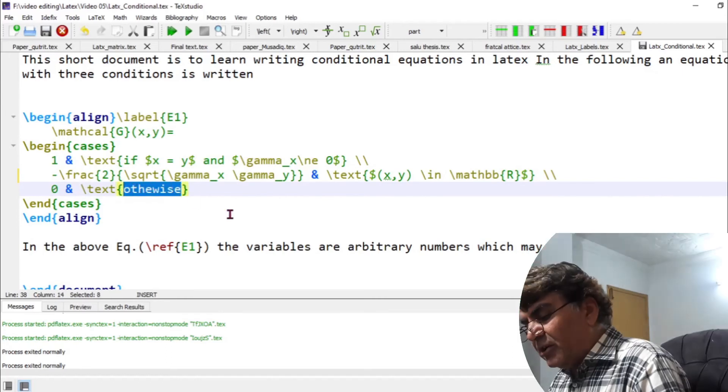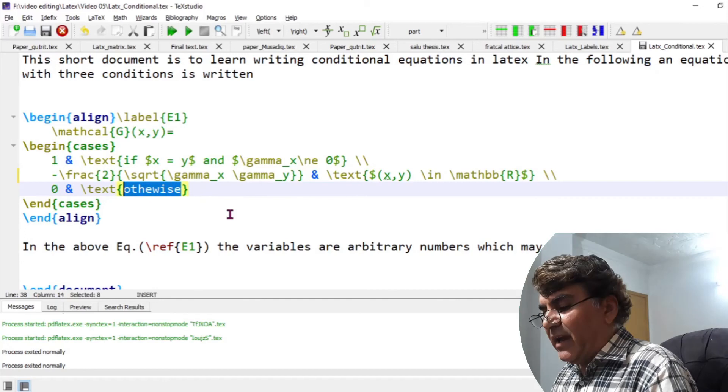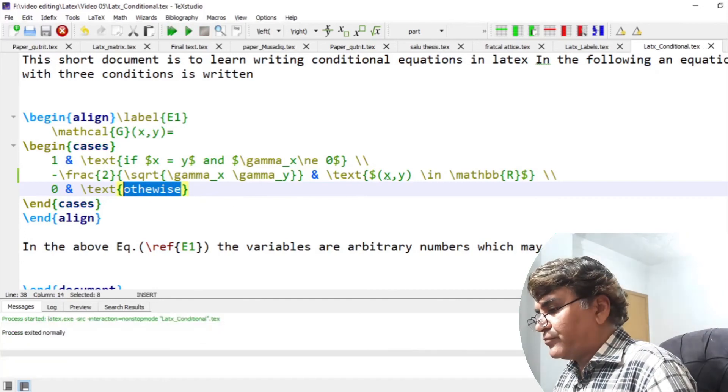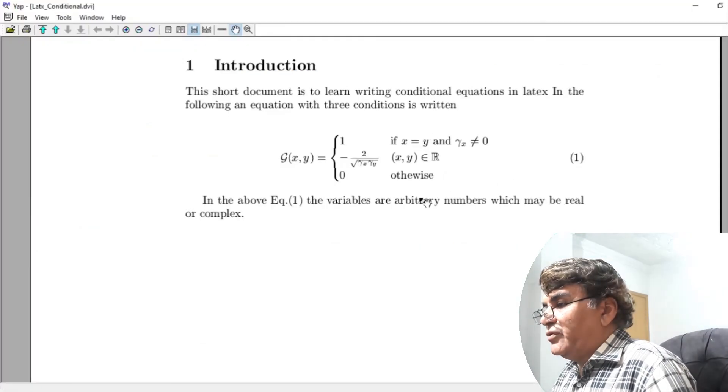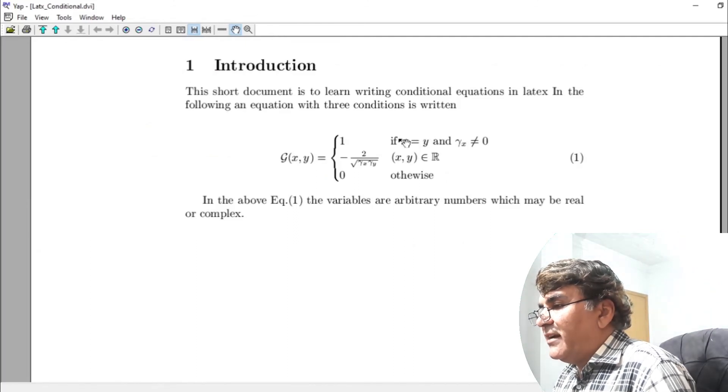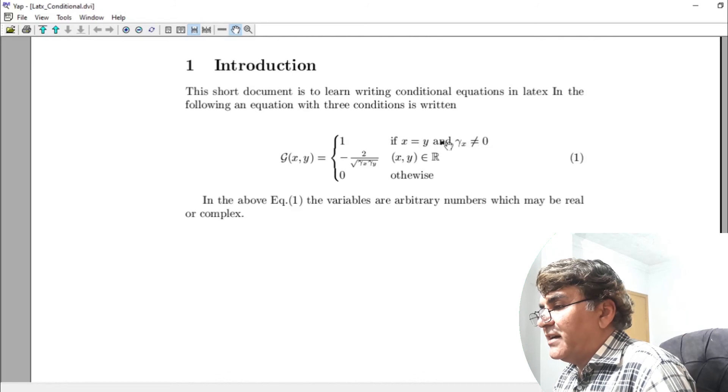If now I again build the document you will understand what I have done. So you see these are the values: one is the value in the first line and then this condition which I wrote inside the backslash text commands.